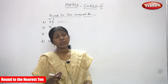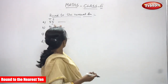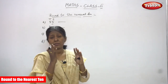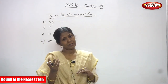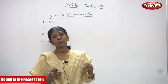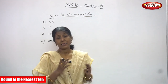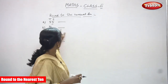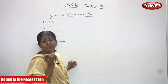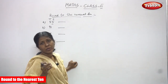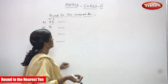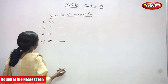That means, what are you going to do? If the ones digit number is 4 or less than 4, we have to round to the smaller 10. If the ones digit is 5 or more than 5, we have to round to the nearest bigger 10.